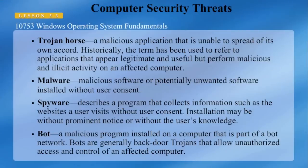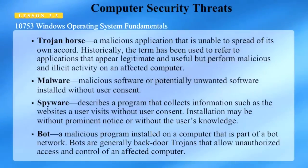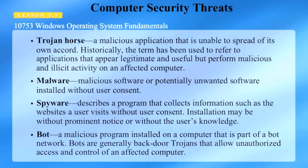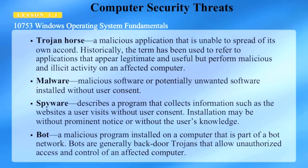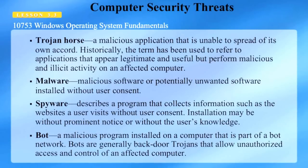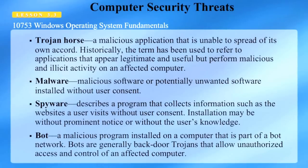As you're exploring computer security threats, keep these definitions in mind. A Trojan horse is a malicious application that is unable to spread of its own accord. Historically, the term has been used to refer to applications that appear legitimate and useful, but perform malicious and illicit activity on an affected computer. Malware is malicious software or potentially unwanted software installed without user consent.